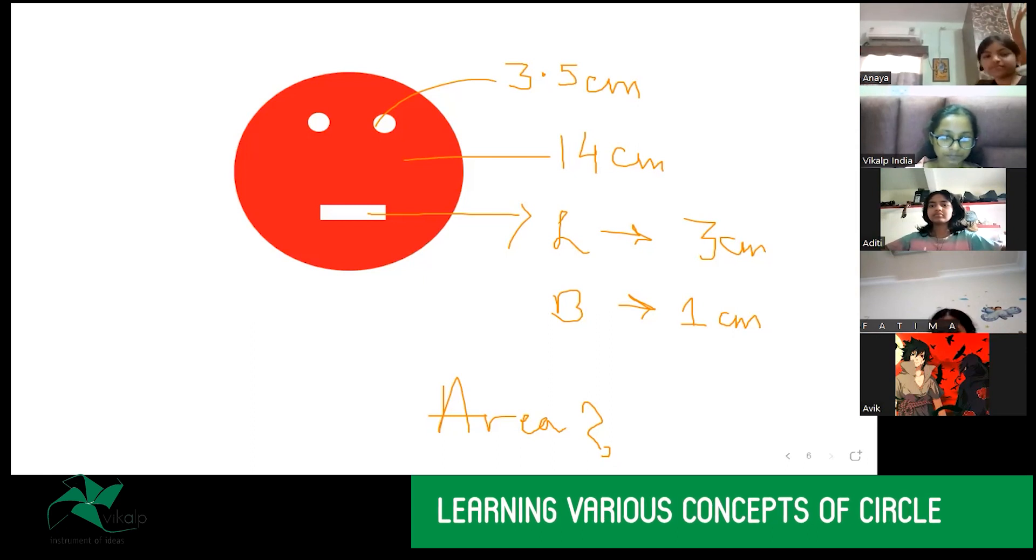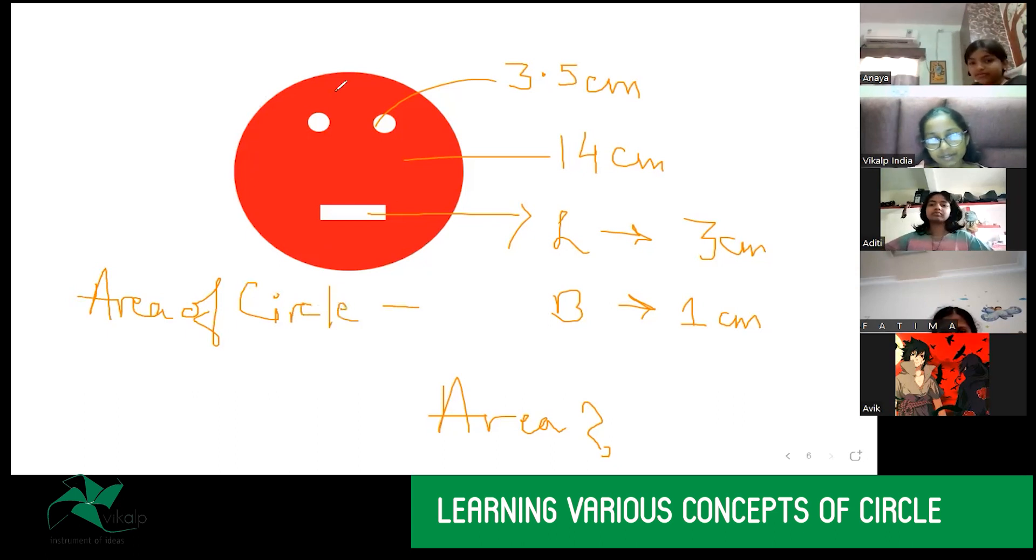What we have is the complete area of the circle, right? Now from this, if we subtract the area of the two small circles, right? Area of two circles and also the area of the rectangle, right? So, I will subtract the area of the rectangle.